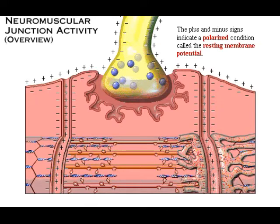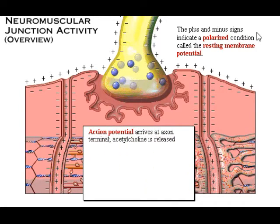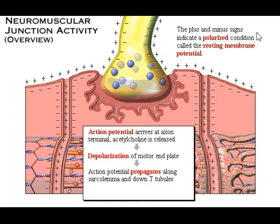The plus and minus signs on the axon terminal, sarcolemma, and T-tubules indicate a polarized condition called the resting membrane potential. Although plus and minus signs are not shown on the motor end plate, it is also polarized. Here's an overview of the activity that occurs at the neuromuscular junction: an action potential arriving at the axon terminal triggers the release of the neurotransmitter acetylcholine, resulting in the depolarization of the motor end plate. This depolarization triggers an action potential that propagates along the sarcolemma and down the T-tubules, causing contraction of the sarcomeres. On the next several pages, we will look at this process in more detail.